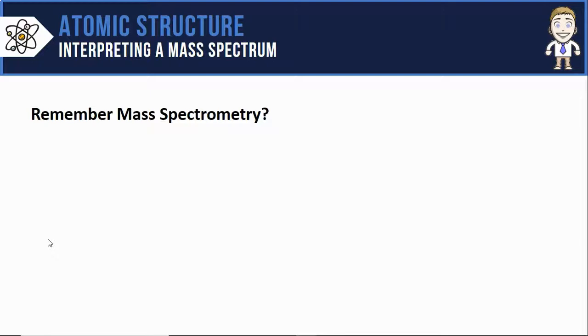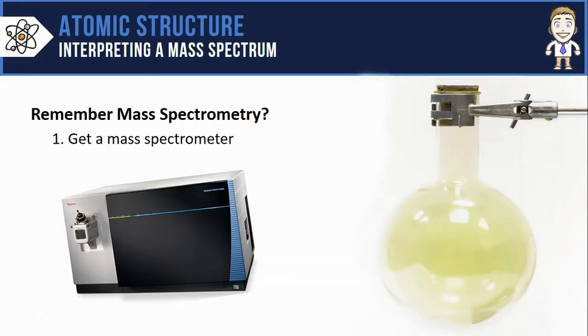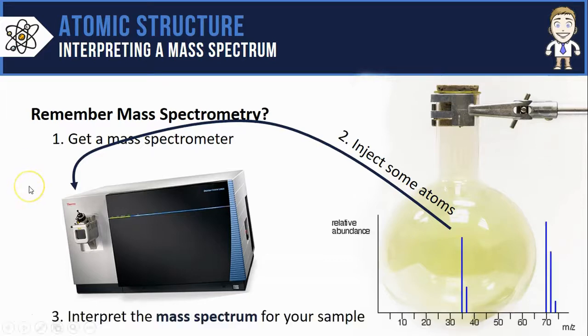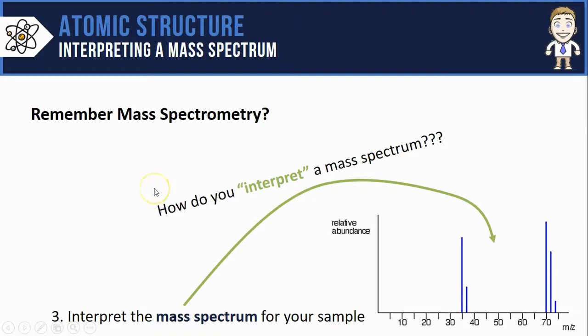Remember from the last video that if you wanted to do mass spectrometry, first you'd have to get a mass spectrometer, then you'd have to get some atoms to inject into the mass spectrometer. The spectrometer will separate those atoms based on their different masses and spit out a graph that looks like this. We call this graph a mass spectrum and in this video we're going to start to learn how to interpret that mass spectrum.